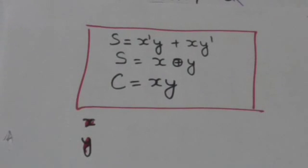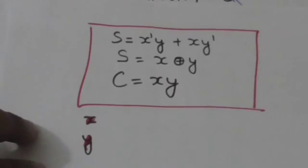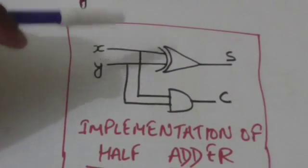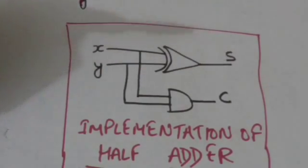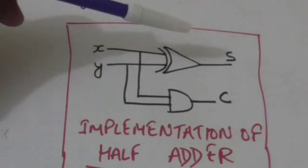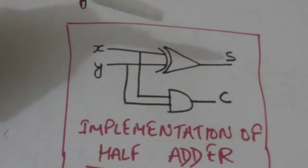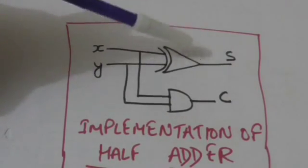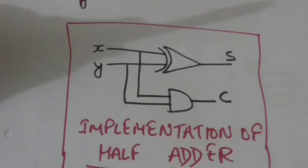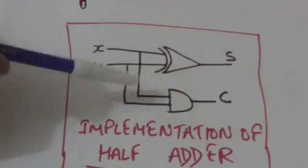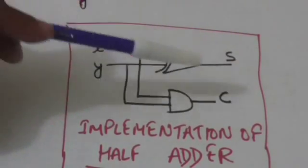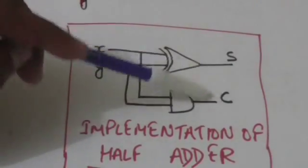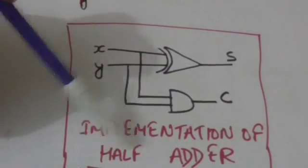Now we have to design a logic diagram for the half adder. X and Y are input variables. Since S equals X XOR Y, this XOR gate performs the XOR operation, so the output of this XOR gate is S. And since carry C equals X AND Y, the AND operation is performed by this AND gate, giving C equals X AND Y. This is the implementation of the half adder circuit.